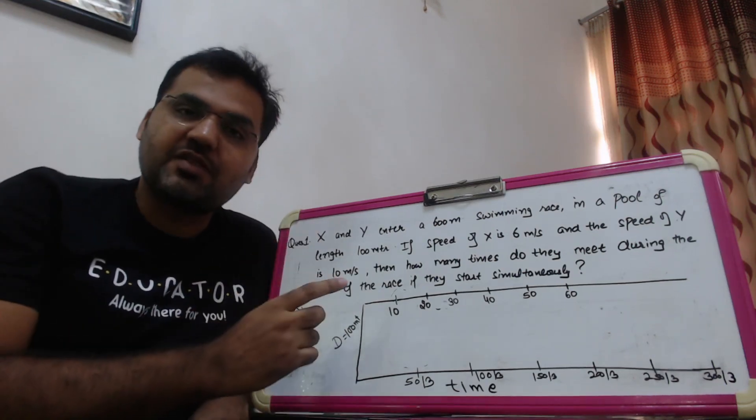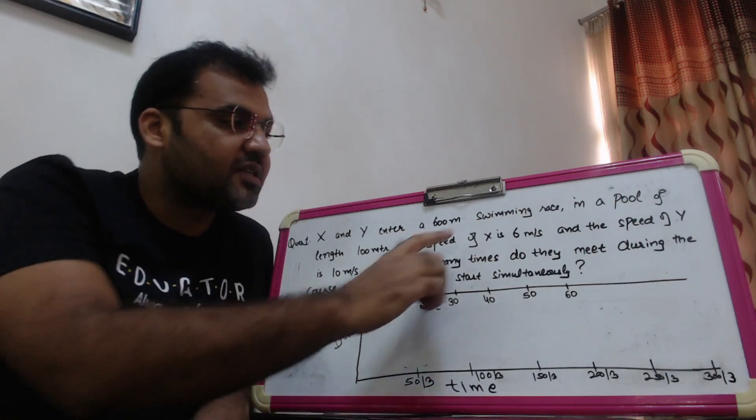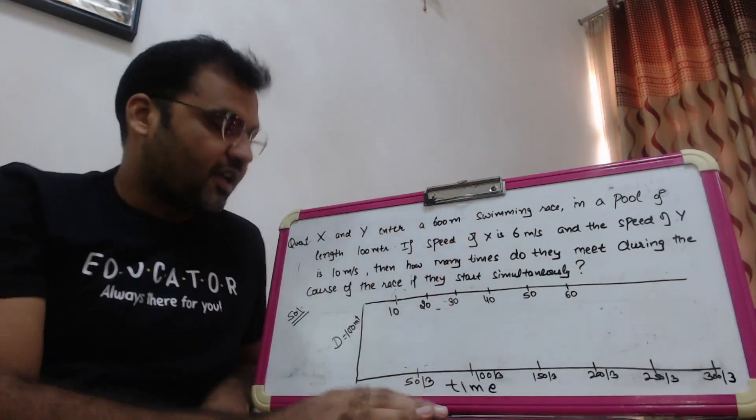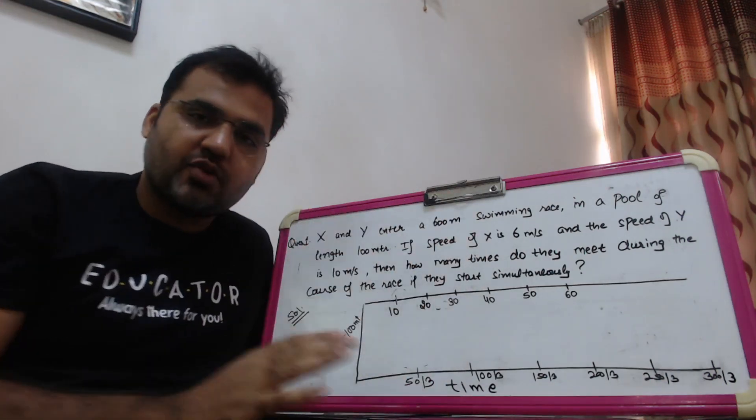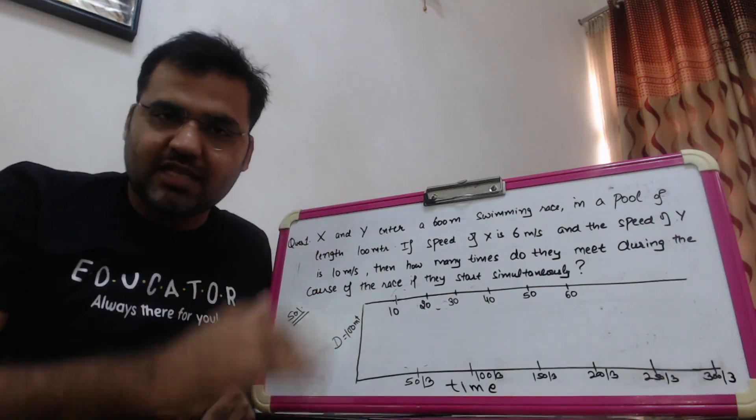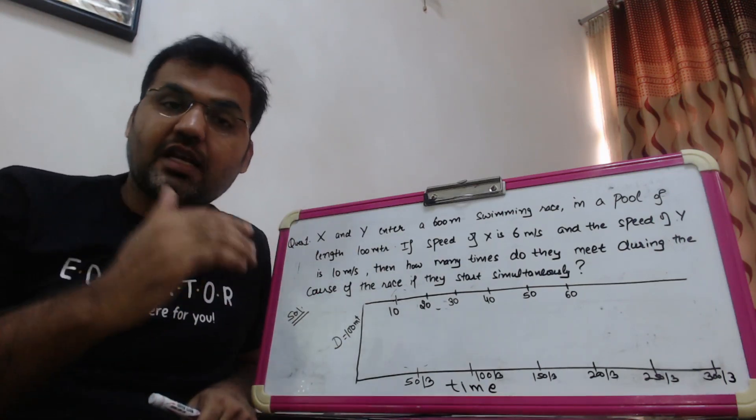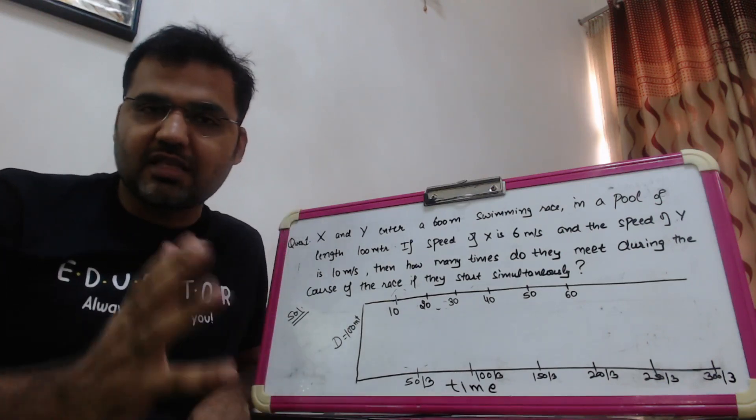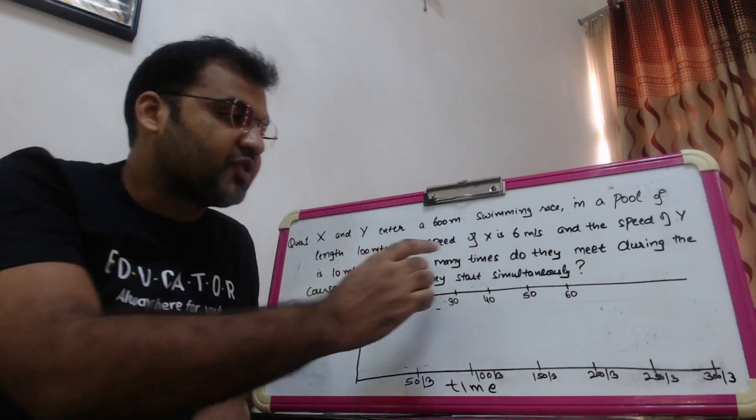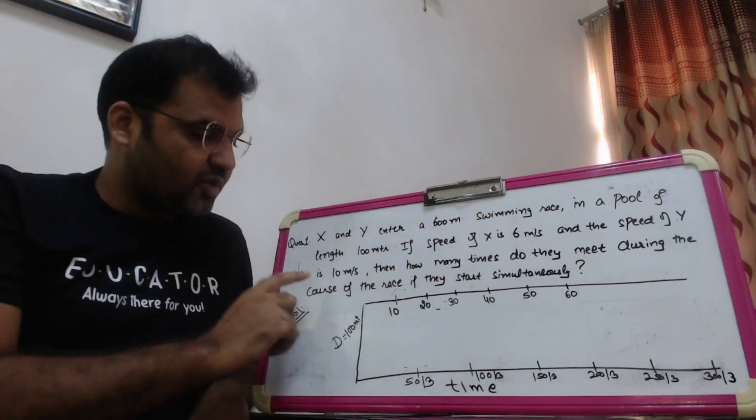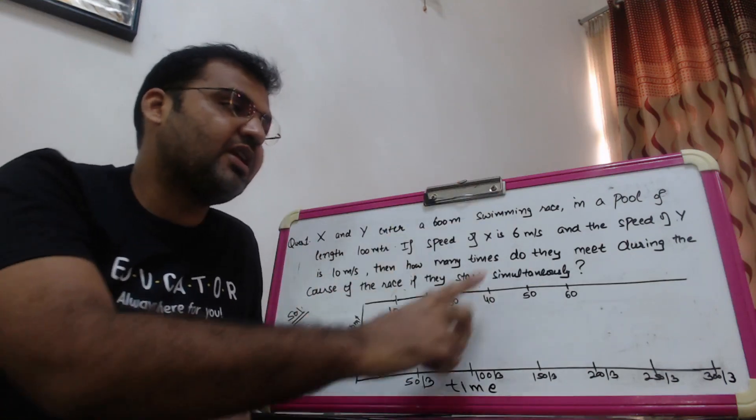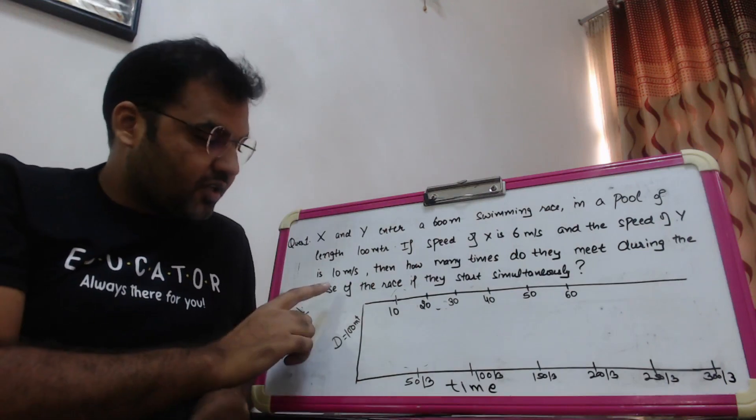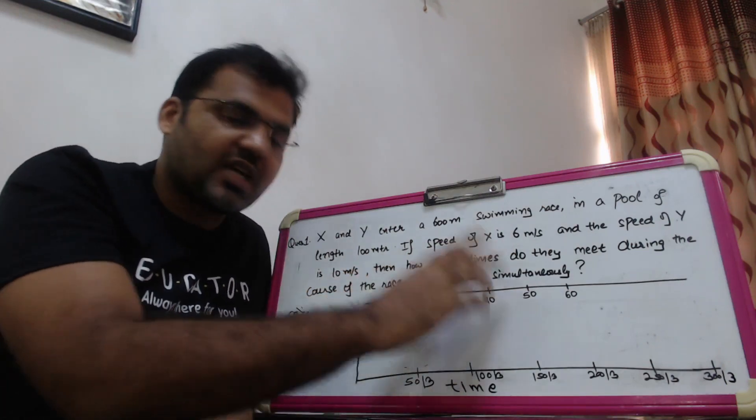You don't need to make equations. By making a simple graph, you can solve questions within seconds. If your concept and understanding of this graph method is very good, you don't need equations. You can do it without making any equation and without using any crammed formulas. The question says X and Y enter a 600m swimming race in a pool of length 100 meters. So it's a 600 meter race in a 100 meter pool. To complete the race, you have to do 6 laps of 100 meters.